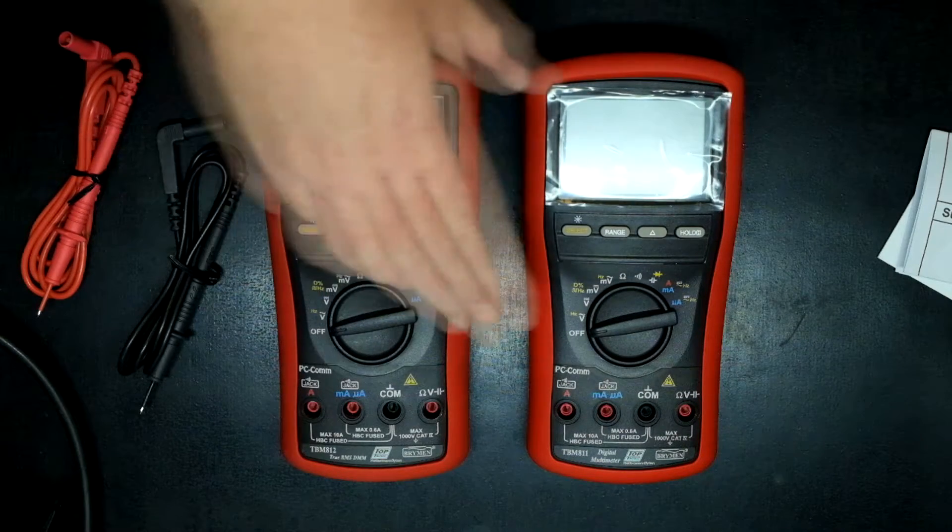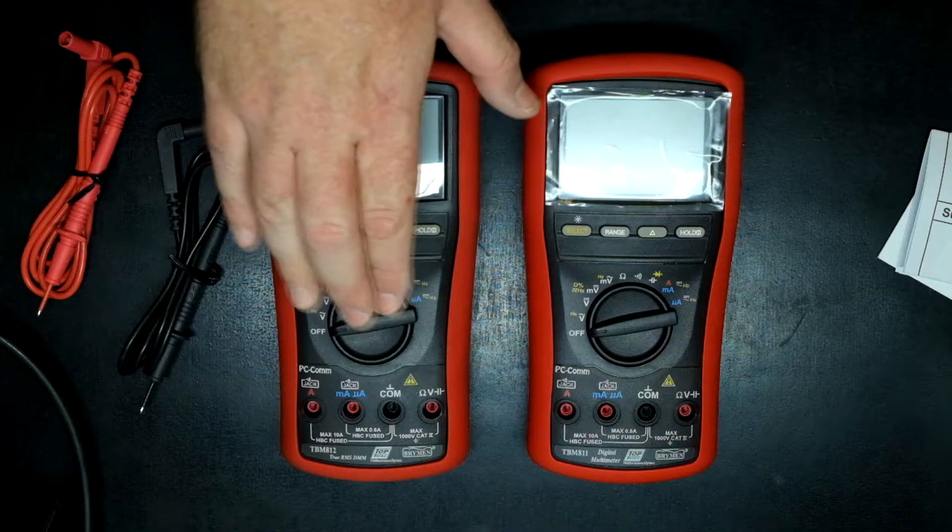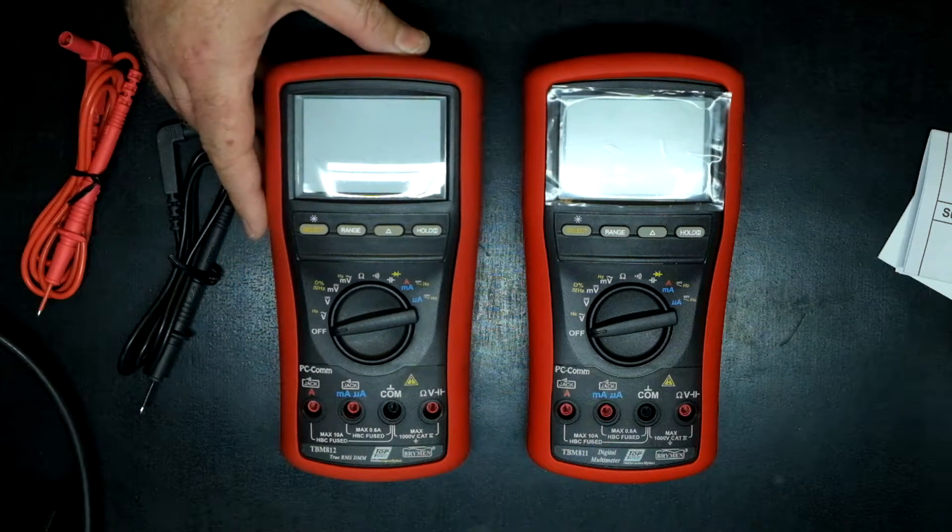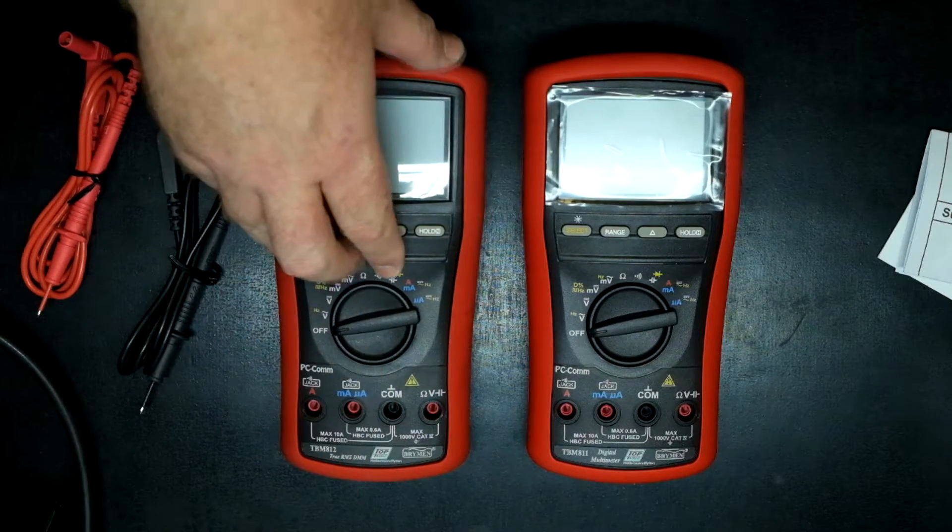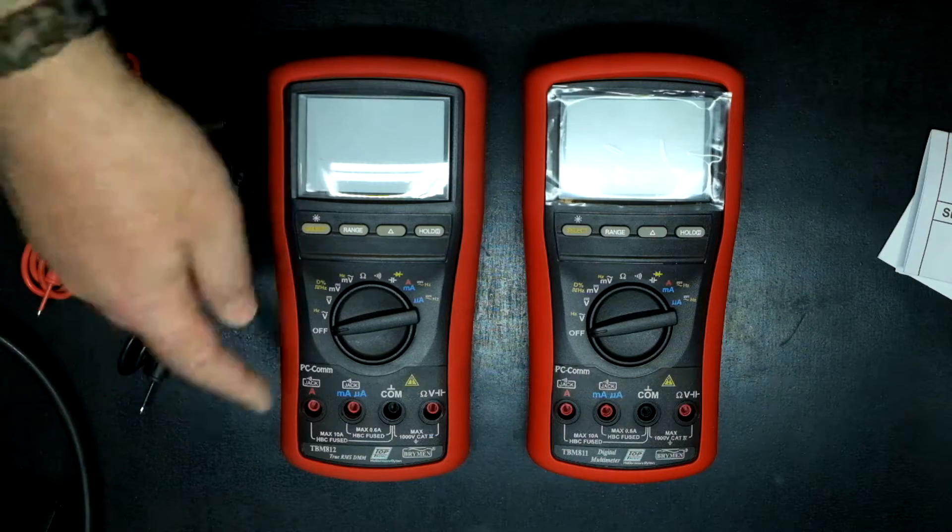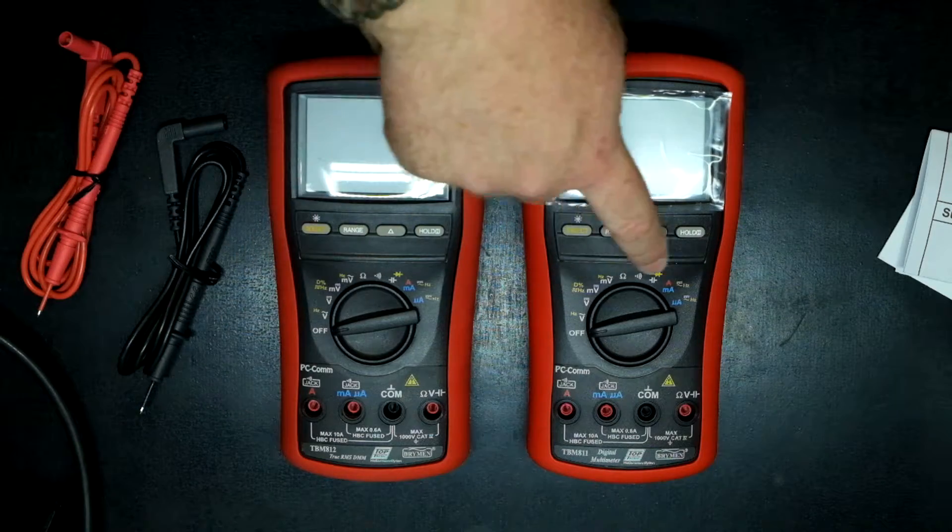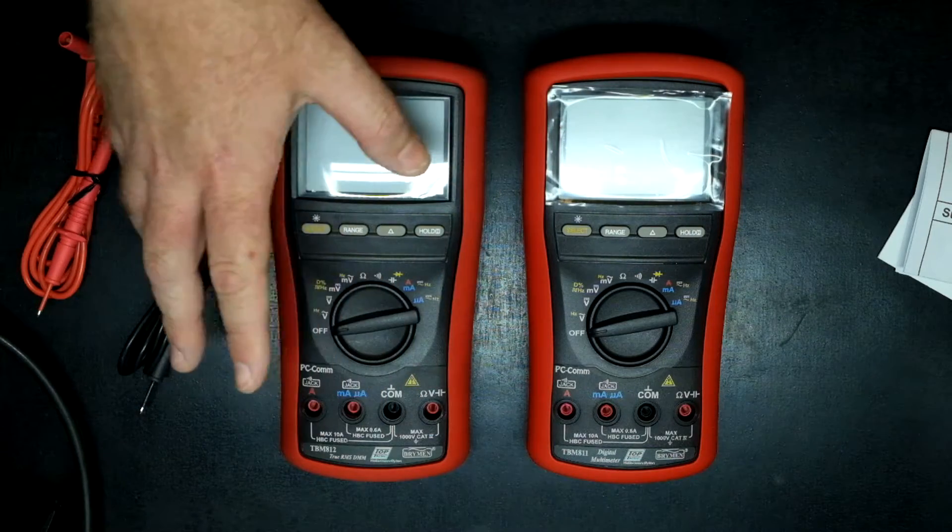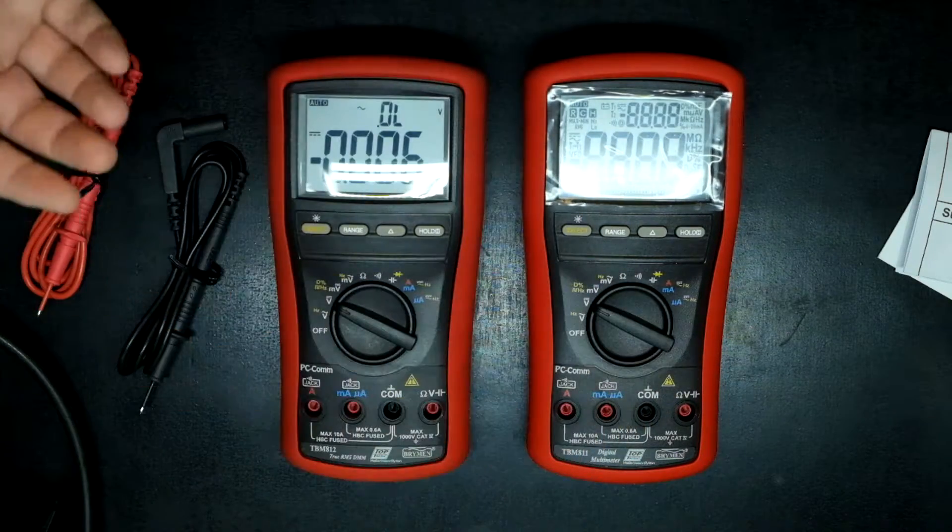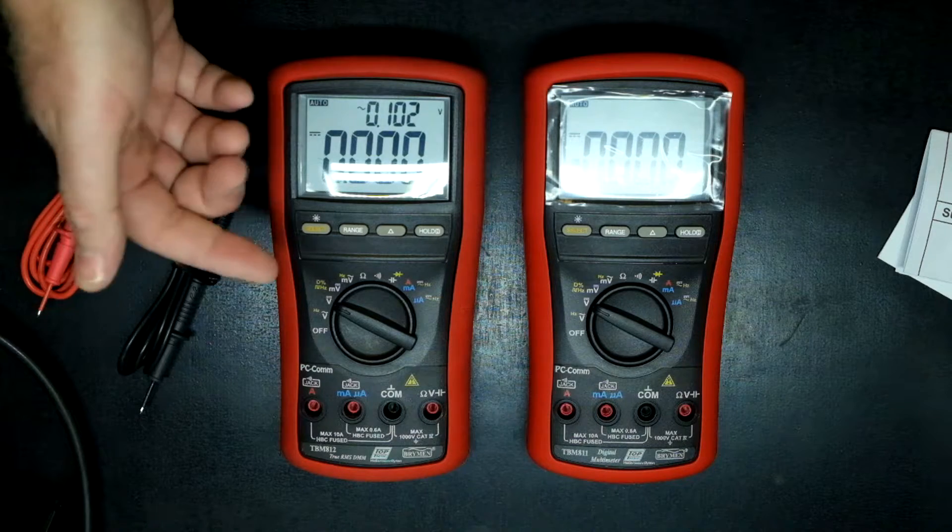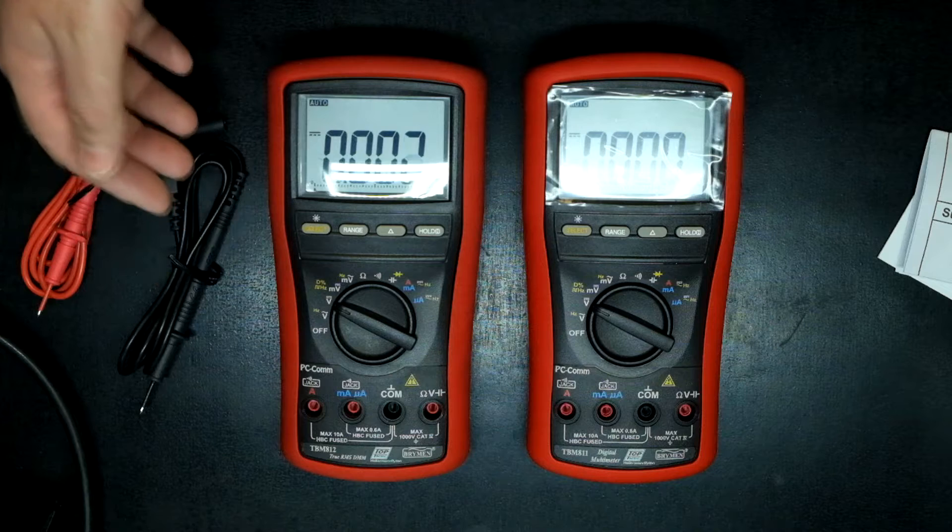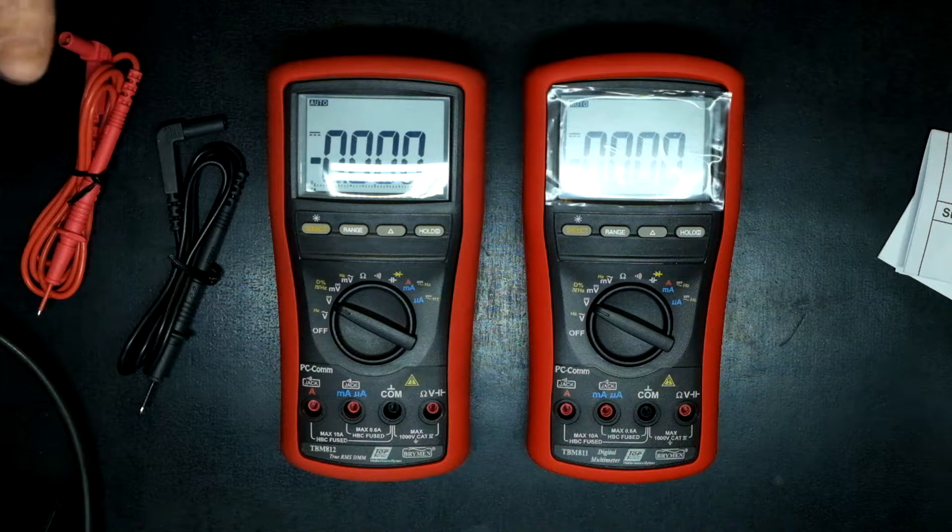Here we have the 811 and the 812. The differences are basically that this meter is true RMS, this one is not on the AC side. All the other functionality is exactly the same. The functions, the operation, the display are pretty much the same. There's no difference between the two meters when it comes to usability. They both do exactly the same thing.